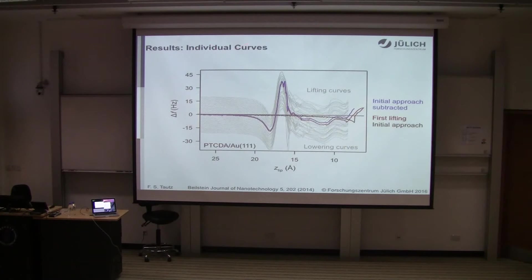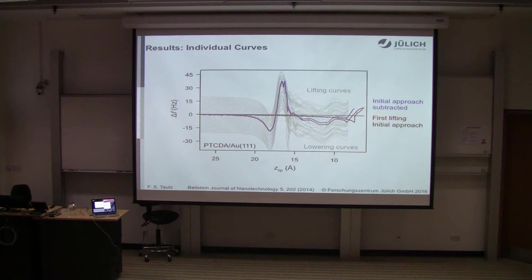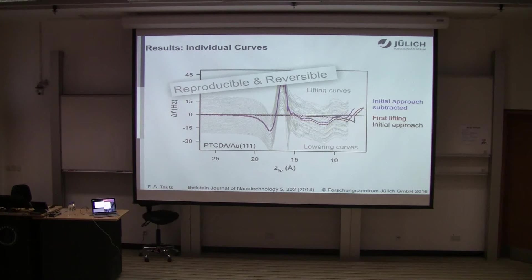This is what the individual curves look like: we make contact, remove the molecule, put it back, remove it again, doing this about 40 times and measuring a curve each time. The first thing you realize is that the lowering curve and the lifting curve are the same — the experiment is both reproducible and reversible.